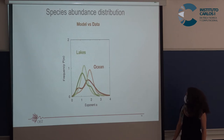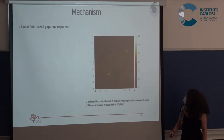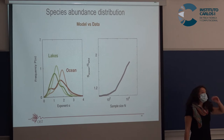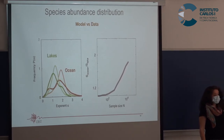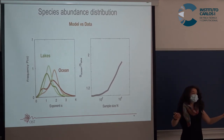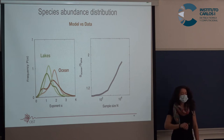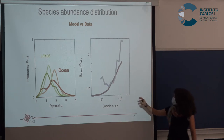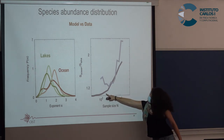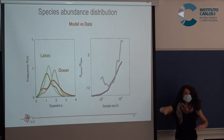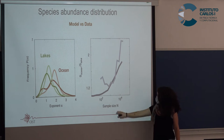We also measured the number of species as a function of sample size and compared it with our model. We wanted to compare Tara Ocean data (with currents) with data from environments without currents, so we looked for another data source for lakes. The growth trend of number of species with sample size is also reproduced by our model.